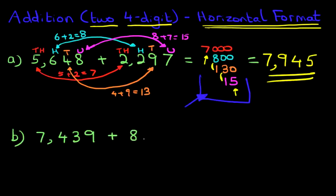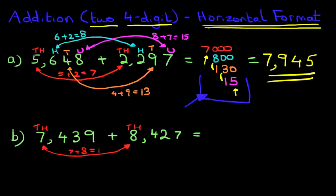Let's have a look at one more example. Again, large numbers - well, larger than the first question. We've got 7,439 plus 8,427. Now, you're probably thinking this is going to be very difficult. Just work through the same principles. Thousands, thousands. Over here, we've got 7,000 plus 8,000. So 7 plus 8 is 15. That's 15,000.